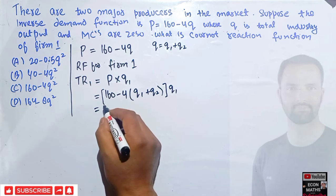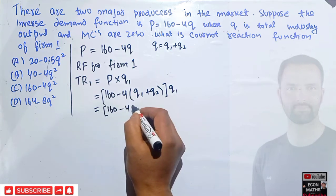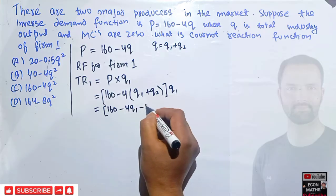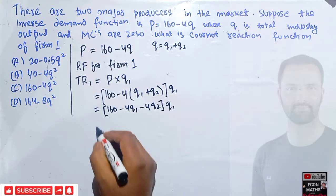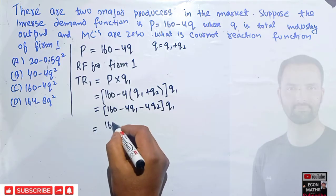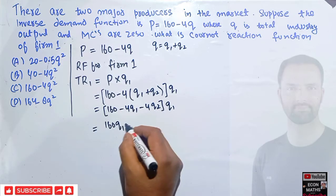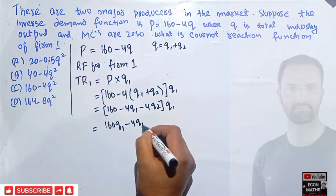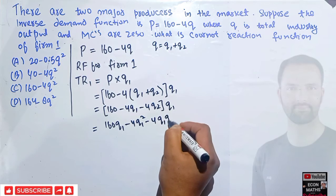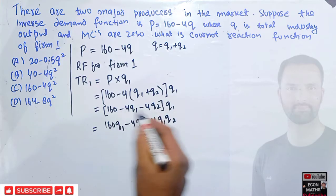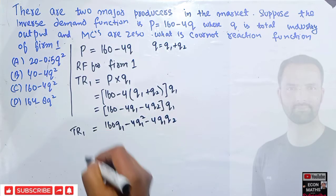Expanding this gives us: TR1 = (160 − 4q1 − 4q2) × q1, which comes out to 160q1 − 4q1² − 4q1q2. This q1 is multiplied to each of these terms. This is our total revenue for Firm 1.